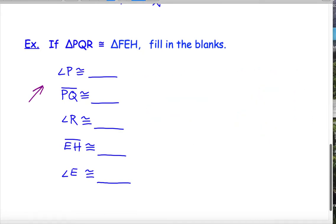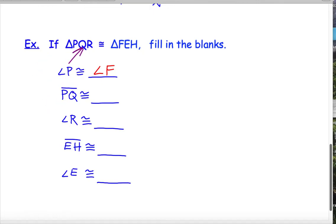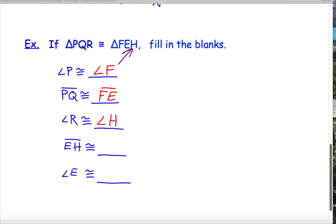Or I could just look at the triangle congruence statement directly. Angle P — P was the first letter, so it matches up with the first letter there, which is F. So angle F. Then segment PQ — PQ were the first two letters, so the first two letters over there are FE. So segment FE. Angle R — R was the last letter, matching up with H. So angle H. Segment EH — that's the second and third letters, so over here that would be QR, meaning segment QR. And angle E — E is in the middle, matching up with Q. So angle E is congruent to angle Q.